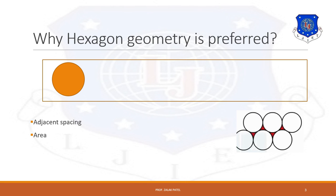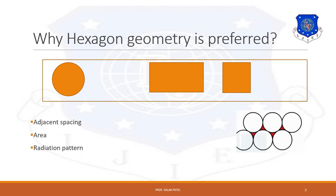The second consideration is area. The area of a hexagon is greater compared to a rectangle or square. For example, the area of a rectangle is A × B, and the area of a square is A², where A and B are the sides. That's why we choose hexagonal geometry. Another criterion for hexagonal geometry is the radiation pattern — the hexagon closely approximates the circular radiation pattern of an omnidirectional base station antenna. This makes analysis easy and manageable in a cellular system.